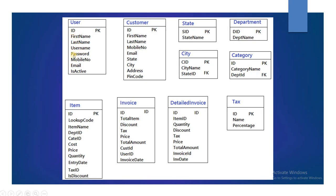I need a customer table as well. In every table I will create one primary key that is ID. The user table has primary key ID, the customer table has primary key ID, the state table has primary key S_ID, and the city table has primary key C_ID. There are also department, category, item, invoice, detailed invoice, and tax tables.